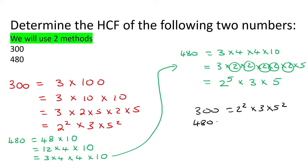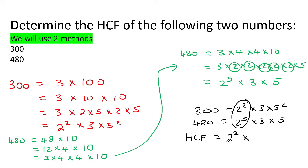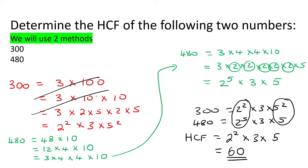For the highest common factor, we choose the lowest for each category. The lowest 2 is 2 to the 2. For the 3s, they're both the same — just choose one. For the 5s, choose the lowest which is 5 to the 1. Working that out gives an answer of 60. And of course if you were allowed to use a calculator, you would skip the manual breakdown and just use the FACT button, which would immediately give you those prime factorizations.